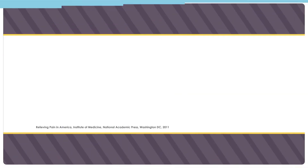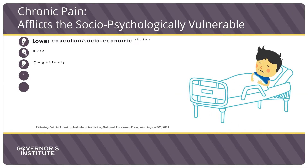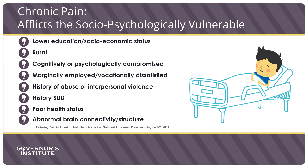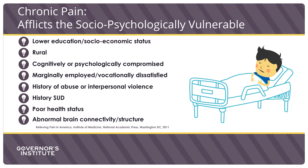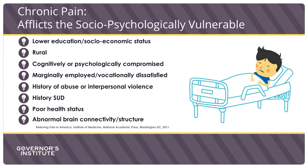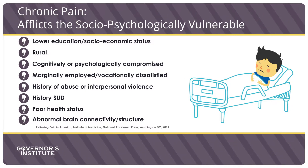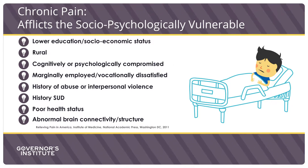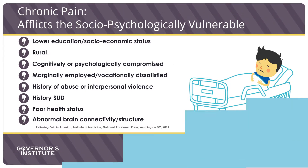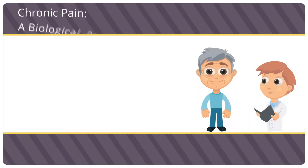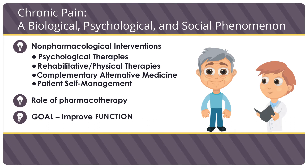Chronic pain disproportionately affects those that are socially or psychologically vulnerable, including those who are less educated, poorer, more rural, marginally employed, or dissatisfied with their vocation, have a history of abuse or interpersonal violence or substance use disorder, poor health, or even abnormal brain structure or function. Chronic pain is not just a biological phenomenon — it also has psychological and social contexts, and all must be addressed for effective treatment.